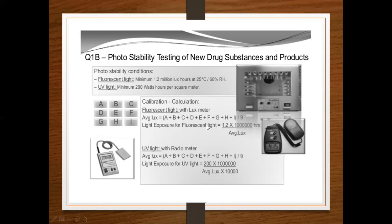For light exposure calculations: fluorescent light exposure = 1.2 million lux-hours divided by the average lux reading. UV light exposure = 200 multiplied by hours, divided by average lux, multiplied by 10,000. These calculations are performed using a lux meter for visible light and a radiometer for UV light.